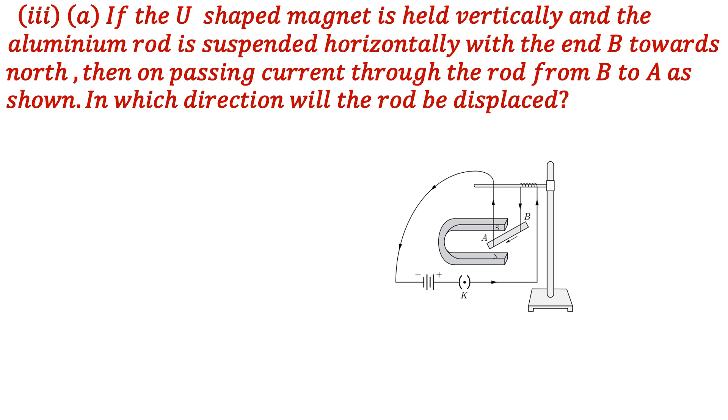In third subdivision, a question is: if the U-shaped magnet is held vertically and the aluminum rod is suspended horizontally with the end B towards the north, then passing current through the rod from B to E as shown, in which direction will the rod be displaced? Now we see the answer.